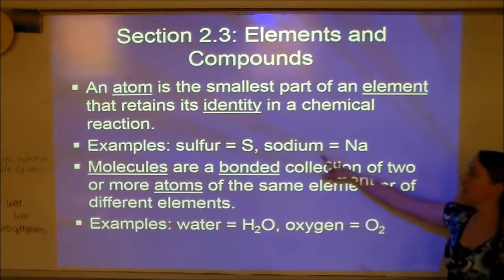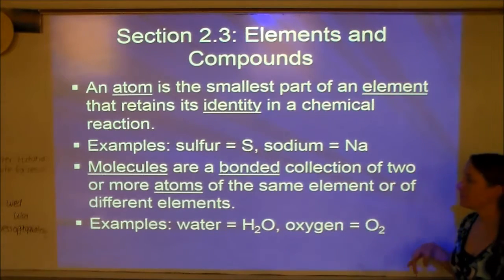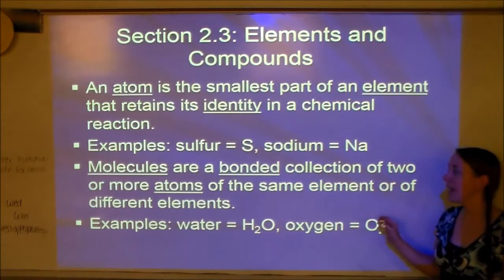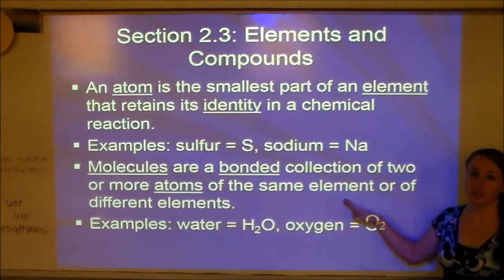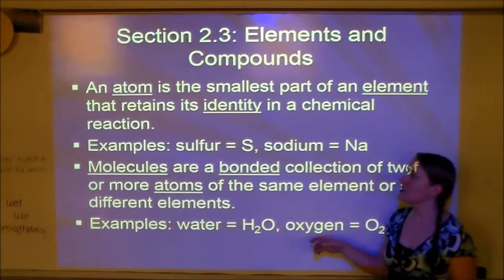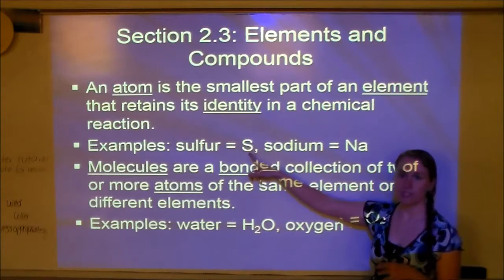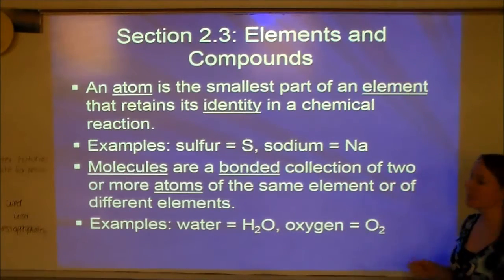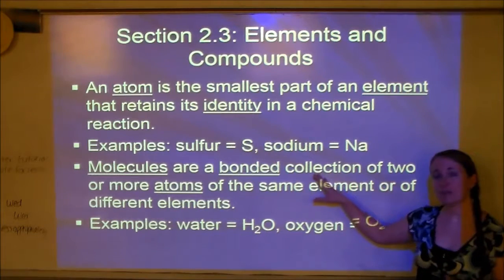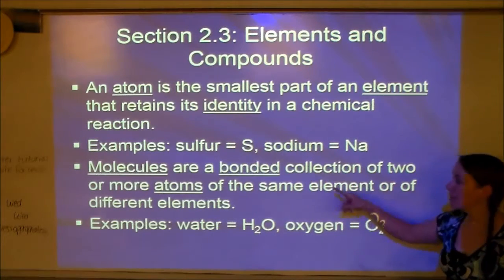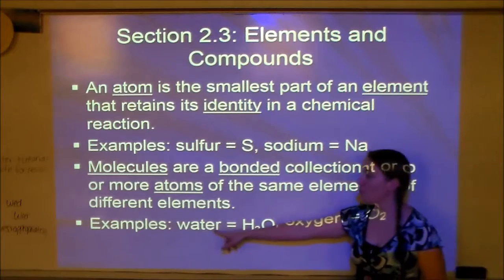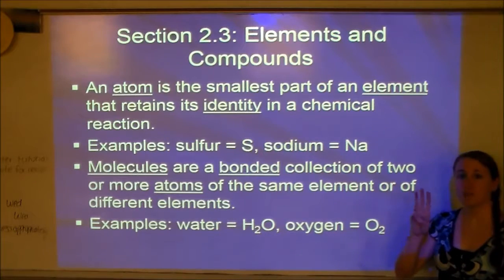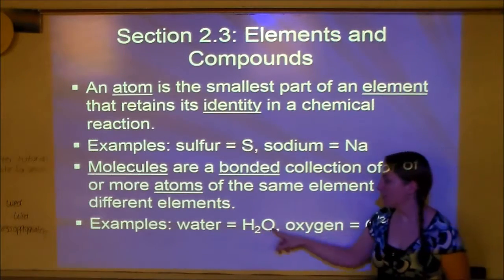Examples of atoms would be sulfur, which is S on the periodic table, and sodium, which is Na. Molecules, on the other hand, are bonded collections of two or more atoms of either the same element or different elements. An atom is just one thing — just S, just Na, just H. Molecules are when atoms bond together. For example, water is H2O: two hydrogens and one oxygen bonded together.